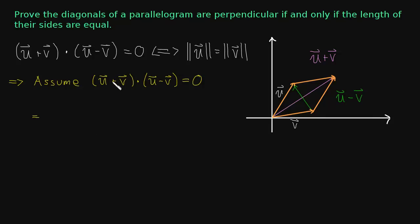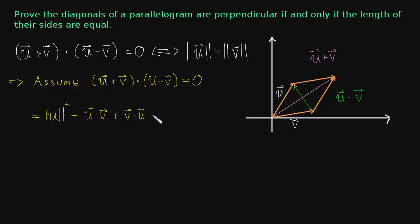That equation implies: expanding the dot product, we're going to have u dot u — which is the length of u squared — minus u dot v, plus v dot u, and then minus the length of v squared, because that's minus v dot v. The dot product is commutative, so u dot v is the same as v dot u, so those two cross terms cancel out.